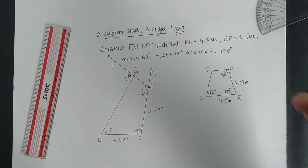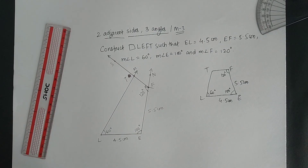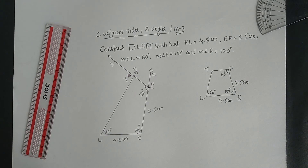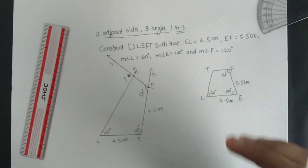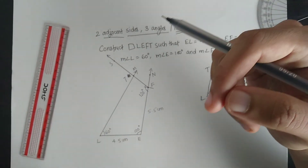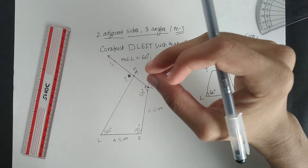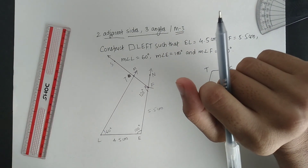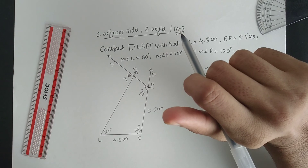I hope you have understood the construction by these two methods. In the next lecture we are going to see the last method of constructing a quadrilateral. Your homework questions are given in the description — one question is related to the first method and another is based on this method. Please try to understand the process completely and apply it to your homework. Until then, goodbye.